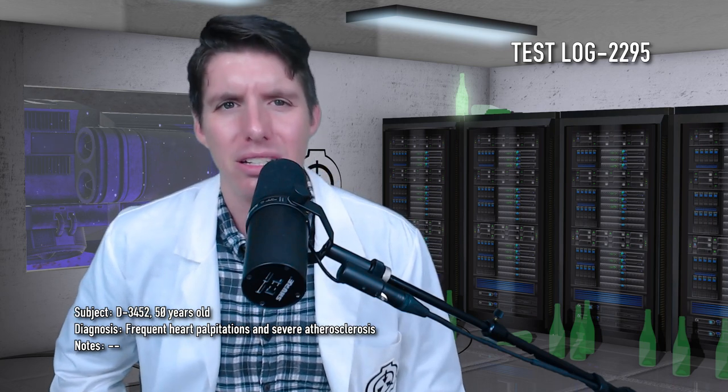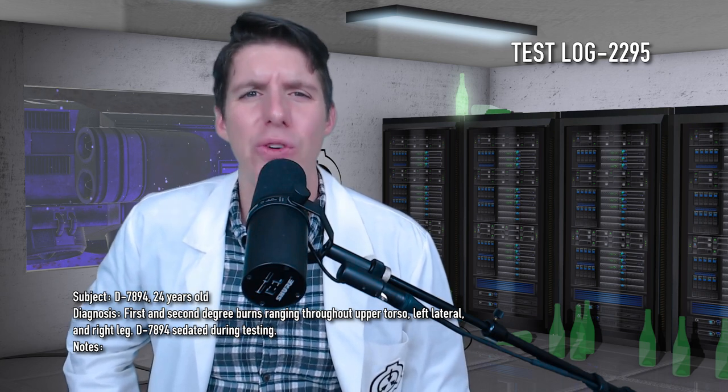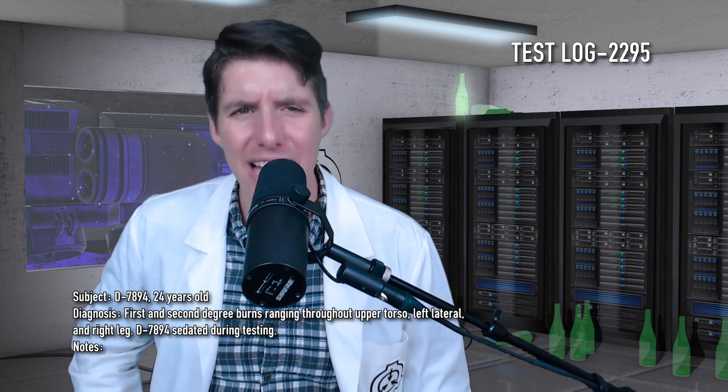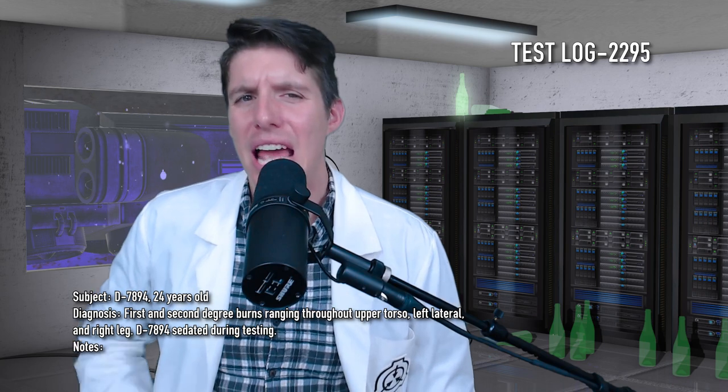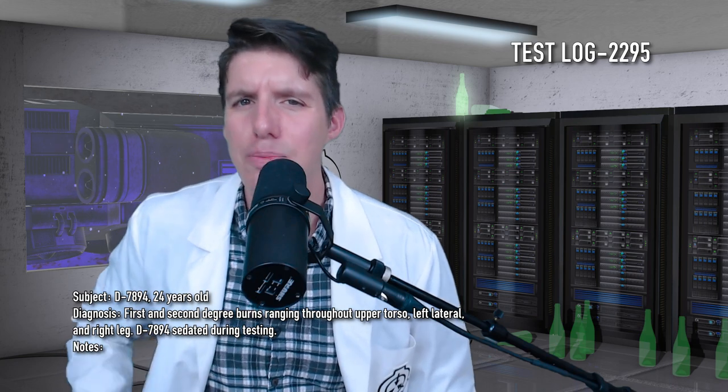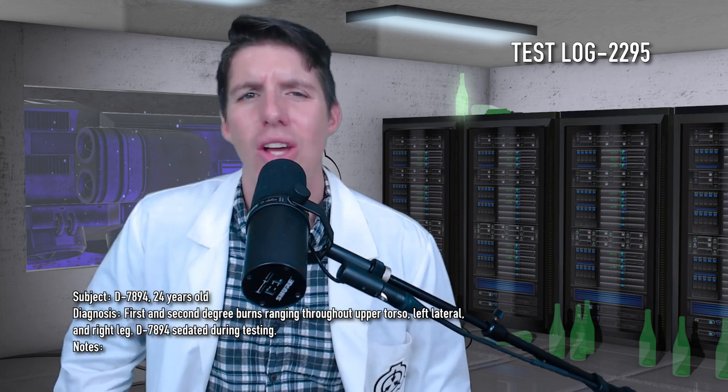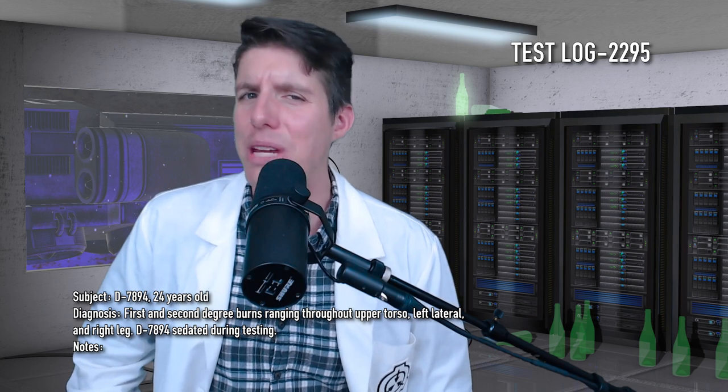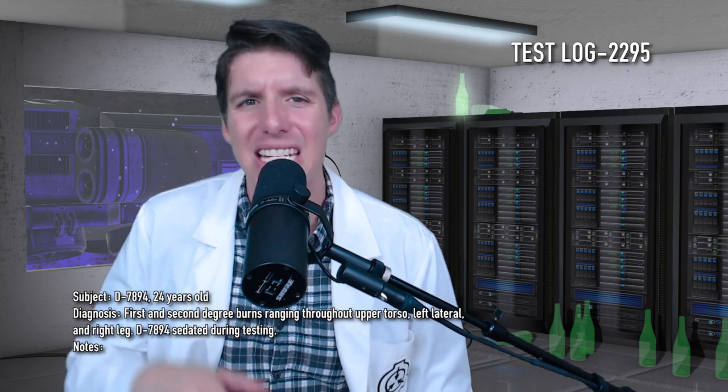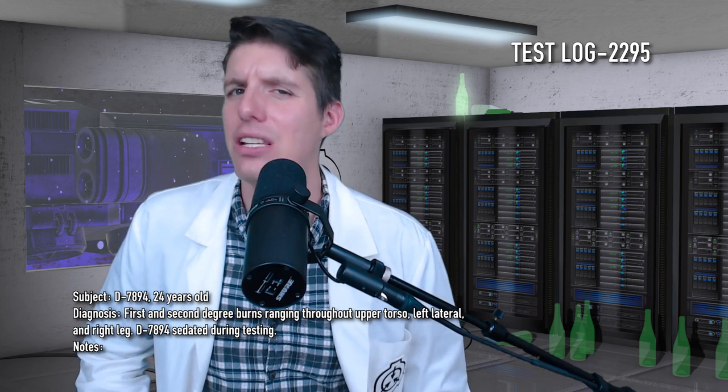Subject D-7894, 24 years old. Diagnosis: First and second degree burns ranging throughout upper torso, left lateral, and right leg. D-7894 sedated during testing. Notes: SCP-2295 sews two 5 meter by 5 meter sections of patchwork fabric. SCP-2295 cuts appropriately sized swatches and manually places one layer onto subject's affected areas, creating multiple instances of SCP-2295-1, and then repeats this process. The created SCP-2295-1 layers act as dermis and epidermis and, upon recovery, D-7894 claims to have retained feeling in replaced skin. Subject makes a full recovery.